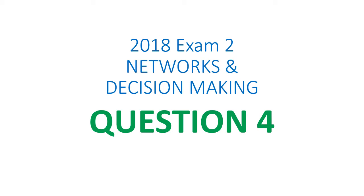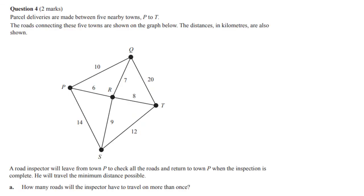2018 exam 2, networks and decision making, question 4. A road inspector is going to leave from town P, check all the roads, and return to P, travelling the minimum distance possible.